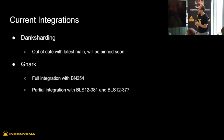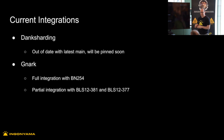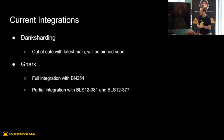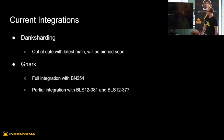So current integrations: we have an integration with a Rust version of a danksharding protocol implementation. Currently it's not working with our latest main of Icicle, but we'll update on that. And GNARC — GNARC is a Golang version of the library for zero knowledge proofs and SNARKs specifically. We have a full integration with BN254, and a partial integration with the BLS12 curves.